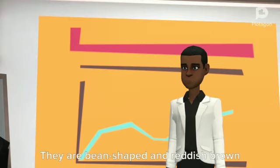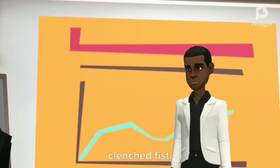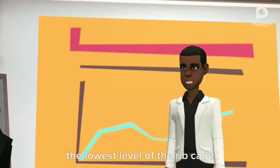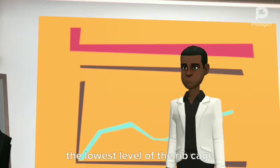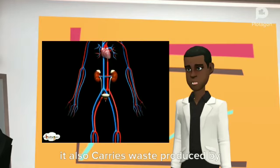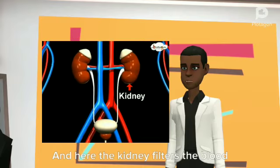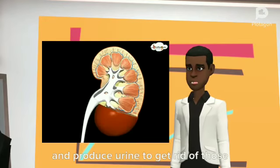They are bean shaped and reddish brown in color. Each kidney is about the size of a clenched fist, located on either side of spine at the lowest level of the rib cage. Blood not only carries food and oxygen, it also carries waste produced by different organs to the pair of bean shaped kidneys. And here the kidney filters the blood and produces urine to get rid of those wastes.